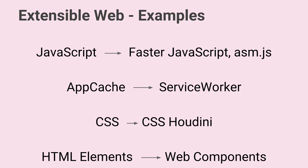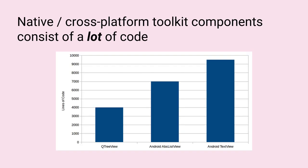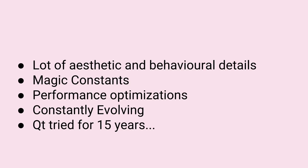So the question is: if we have this low-level control, does that get us to a point where we can implement components as good as an Android list view or a UITableView in our apps? The problem is there's a lot of code in these components. Even if we did have all the controls necessary to implement them, not only is this a lot of code, it's also continually evolving code. We'd have to spend a lot of time trying to emulate it. There's a lot of assessing and behavioural details, lots of magic constants about exactly how fast something moves when you flick it on the screen, and lots of subtle performance optimisations.